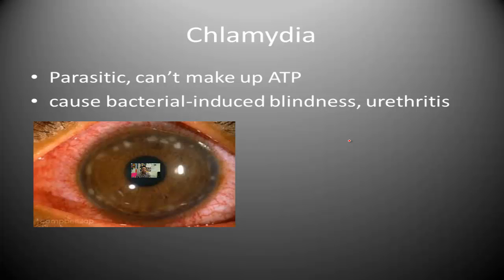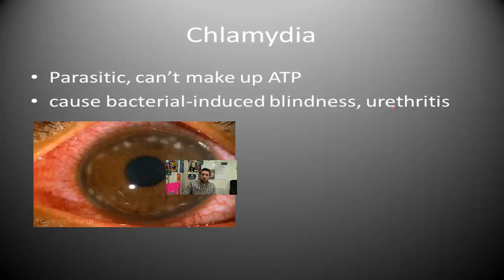The third type within the domain bacteria is chlamydia. It's parasitic, meaning it requires a host and cannot metabolize to make its own ATP. It's very harmful and can cause bacterial-induced blindness and urethritis — the suffix -itis meaning inflammation, so urethritis is an inflamed urethra.